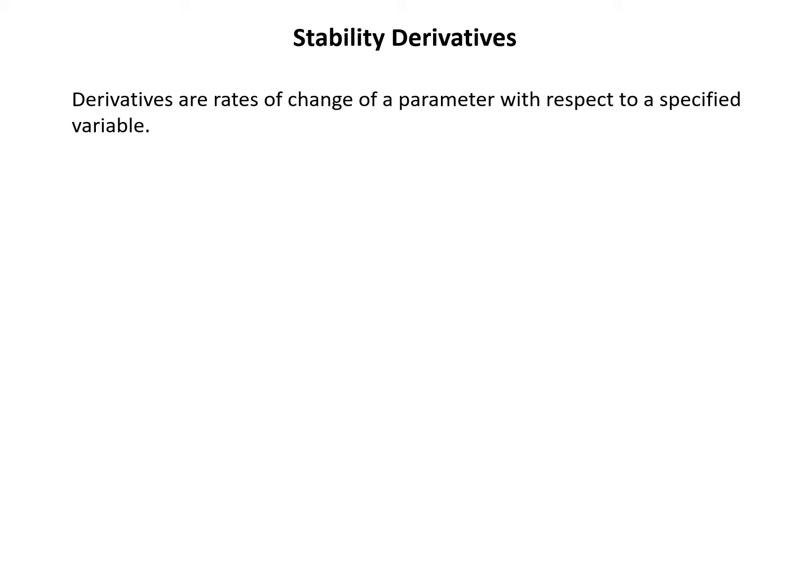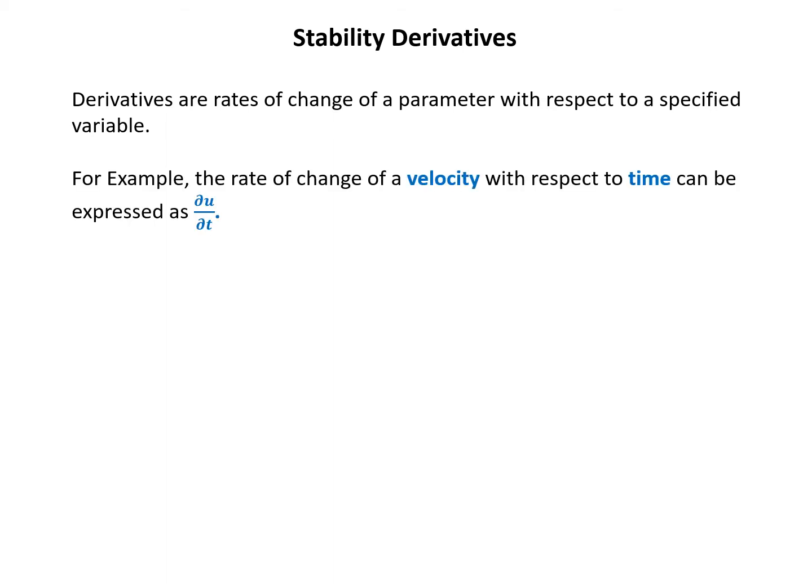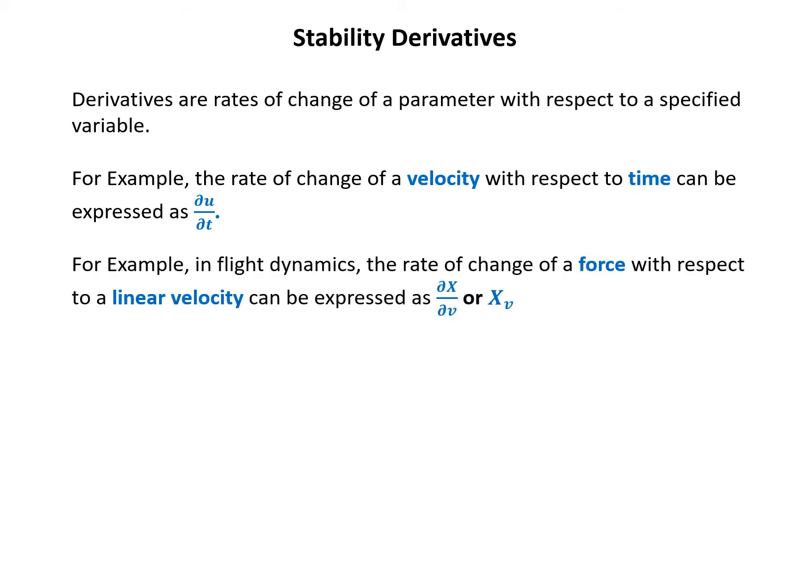We already know derivatives are rates of change of a parameter with respect to a specific variable. For example, the rate of change of velocity with respect to time can be expressed as ∂u/∂t. In flight dynamics, the rate of change of a force with respect to a linear velocity can be expressed as ∂X/∂v, or written as X_v, where v appears as a subscript.